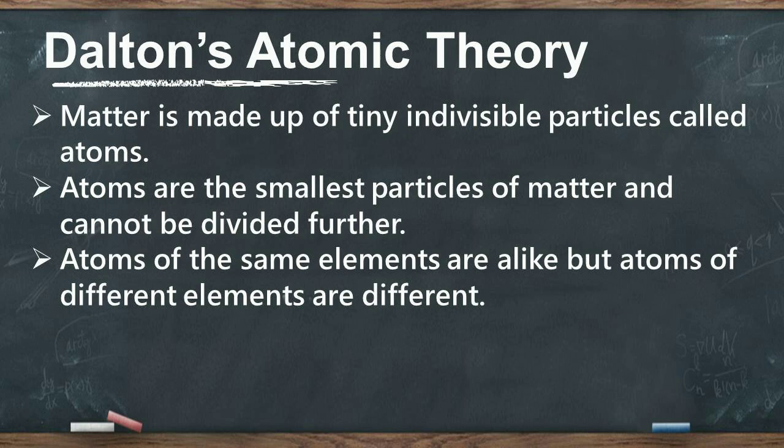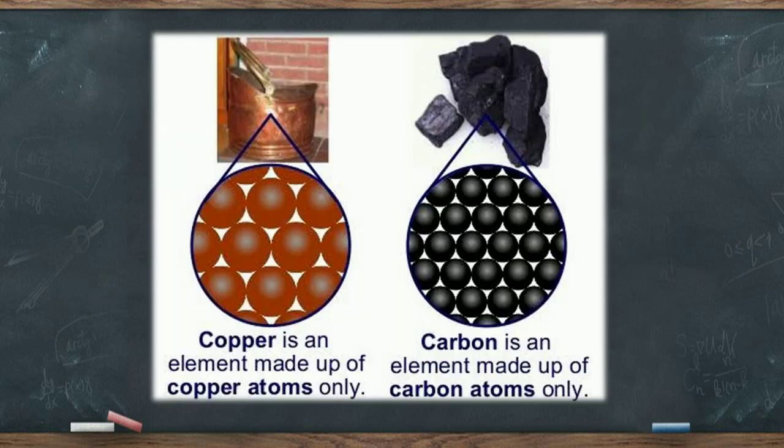Atoms of the same element are alike or identical, but the atoms of different elements are different. For example, all the atoms of copper are alike and all the atoms of carbon are alike, but the atoms of copper and carbon are different from each other.